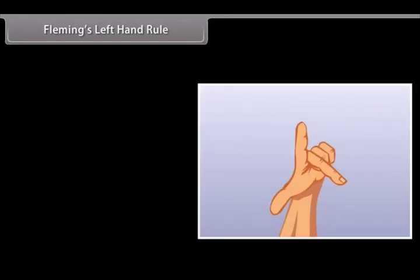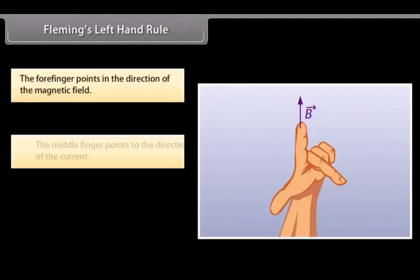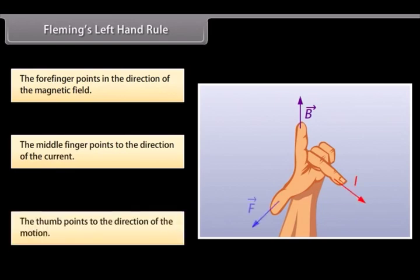Fleming's Left Hand Rule is a mnemonic to represent three directions. You need to stretch your thumb, forefinger and middle finger of your left hand. Each finger points to a specific direction. The forefinger points in the direction of the magnetic field. The middle finger points to the direction of the current. The thumb points to the direction of the motion. This is Fleming's Left Hand Rule. Examples include woofers, subwoofers, electrical actuators, etc.